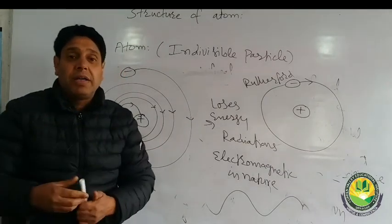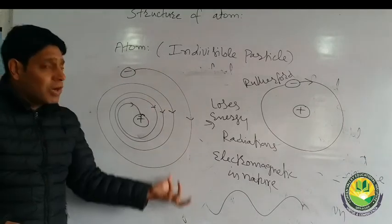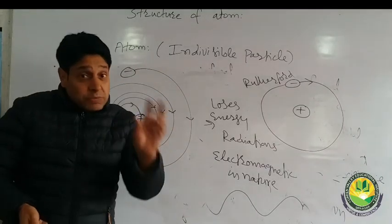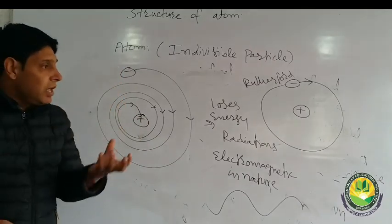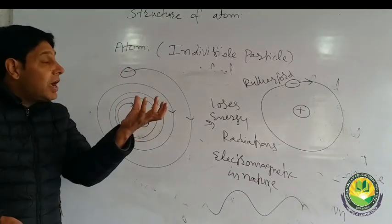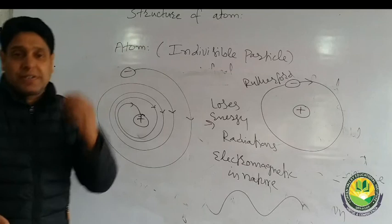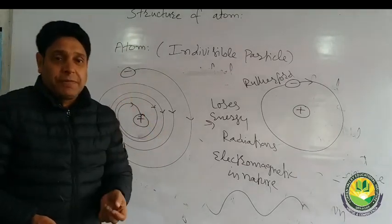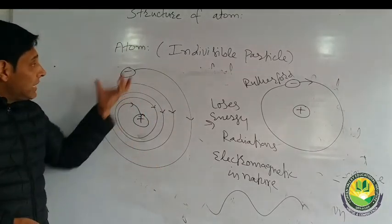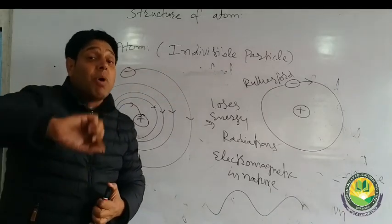The answer to why the orbit does not shrink could not be found from Rutherford's model. That is why Bohr's model of atom came — and when we study Bohr's model, we will explain what happens to the energy of the electron and how the electron maintains its orbit. That will be our next lecture. Thank you very much.